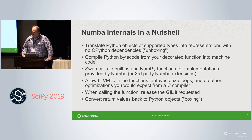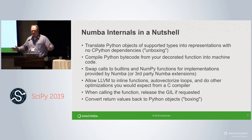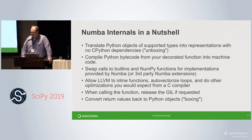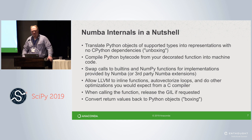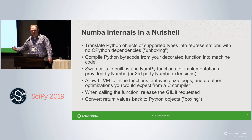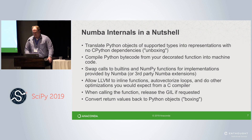When you call the function, we can actually release the GIL if you request it. So if you have threading happening outside of your Numba function, you can release the GIL on the way in and that function can run in parallel on multiple threads. And then when we're done, if you return anything back out of your function, we have to re-box it back into Python land because we're going back into the interpreter.